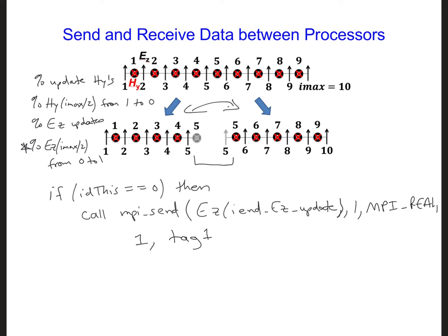And the processors that are sending and receiving the data are in our communicating world, so we're going to put MPI_COMM_WORLD. And we're going to store the status of this transfer in an array called status. And then if there are any errors with this transfer, we'll see that in this error flag. And that is the end of our MPI_send call.